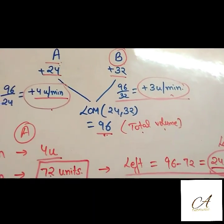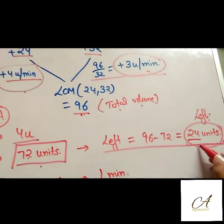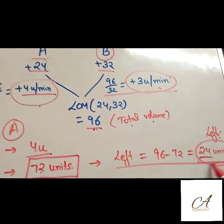If you go by the conceptual method, this will take very long time, so just remember this trick. So 24 units has to be filled by B alone.